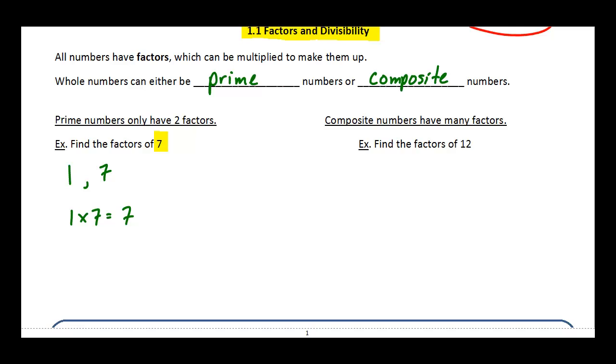By comparison, composite numbers, an example of that would be the number 12. And 12 is a composite number because it has the factors one, two, three, four, six, and 12. So for example, one times 12 equals 12, two times six equals 12, and three times four equals 12. So because we've got some option other than one and the number, it's a composite.